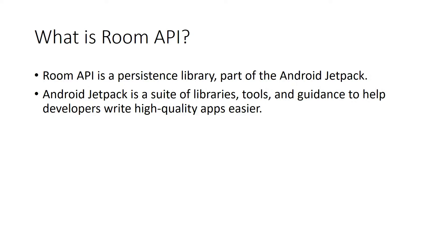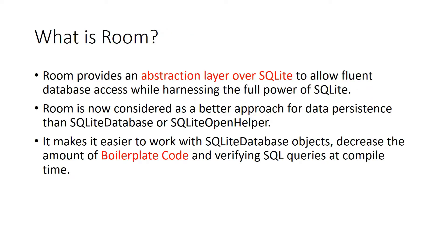The main advantage of these types of libraries is that they are high quality APIs without the kinds of errors we make in manual coding. Room provides an abstract layer over SQLite — Room is not a separate database, it is still using SQLite. But instead of SQLiteOpenHelper and SQLiteDatabase classes, we use Room API classes, which are different and faster than the older methods.